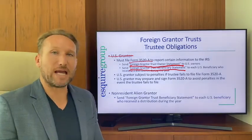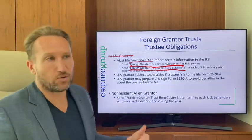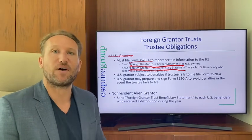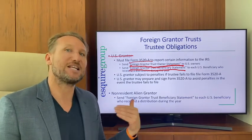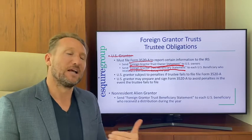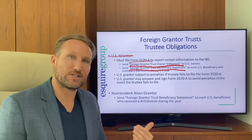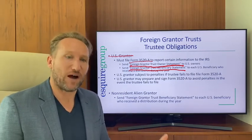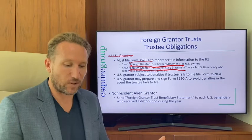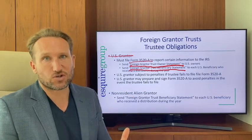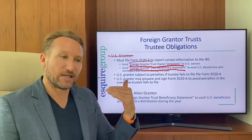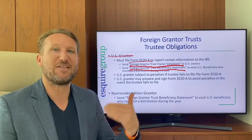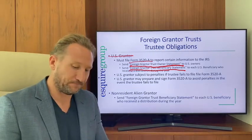It's the U.S. grantor who is penalized if the Form 3520-A is not filed by the trustee. Generally, we tell clients: if you can't get your trustee to file the 3520-A, the U.S. grantor should have it prepared, sign it, and file it themselves.